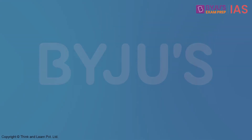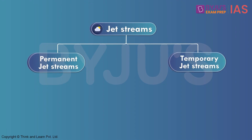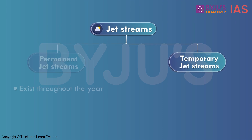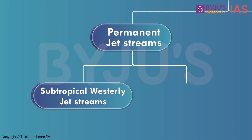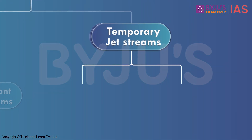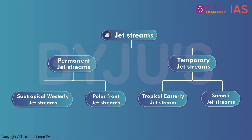There are two different types of jet streams: permanent jet streams and temporary jet streams. Permanent jet streams are those which exist throughout the year, while temporary jet streams are formed in a specific location for a limited period of time. The two major permanent jet streams are the subtropical westerly jet streams and the polar front jet streams.